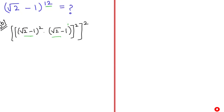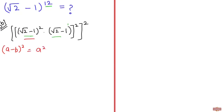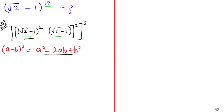Next, I'm going to use the algebraic property here. For that I'm going to write: (a - b)² = a² - 2ab + b². So in replacement of (√2 - 1)², I'm going to apply this expansion.